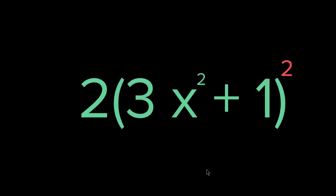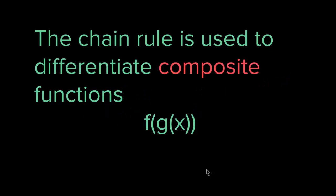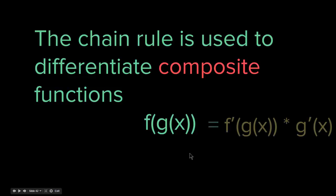So what is the rule in order to differentiate that? We have a rule called the chain rule, used to differentiate composite functions. If we have the composite function f of g of x — a big function with a smaller function inside — the rule is: we take the differentiation of the bigger function, f prime of g of x, times g prime of x — the differentiation of the smaller function inside.